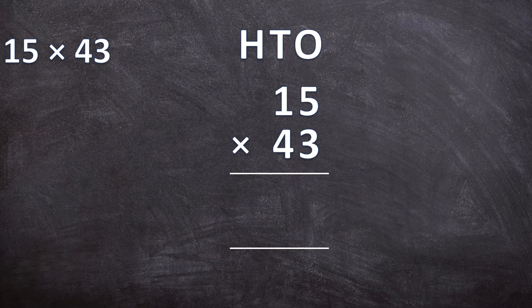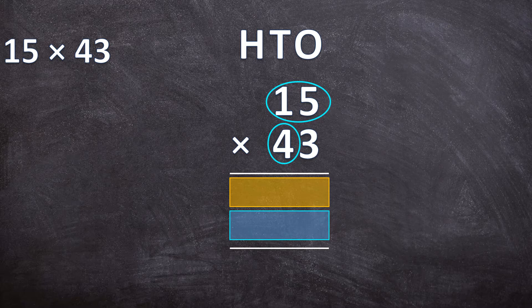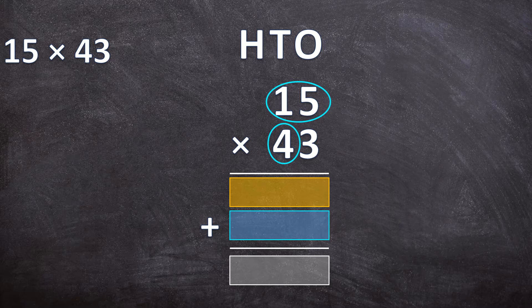We are going to start with the 3 and multiply the 3 by the 15, and that answer we write exactly underneath our multiplication sum. Then we move on to the 40 and multiply the 40 with the 15, writing that answer exactly underneath our first answer. Then we add those two answers to get our final answer. So to recap: first multiply 3 by 15, then multiply 40 by 15, add them together, and that gives us 15 times 43.